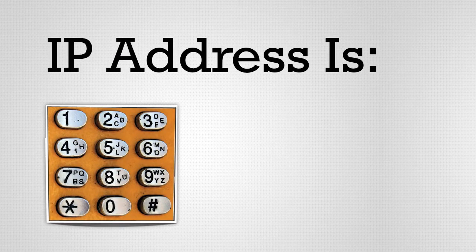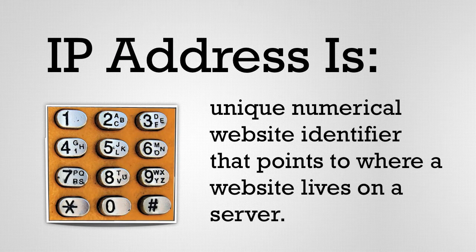Every website on the internet has a unique address. That address is called an IP address and it looks something like 192.24.7.15. Now the thing with that is that's great for computers — they can find out exactly where you are — but not real great for humans.